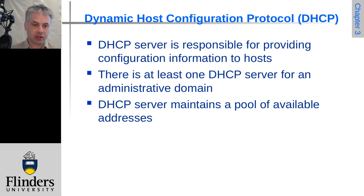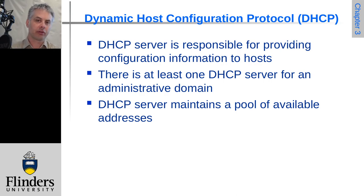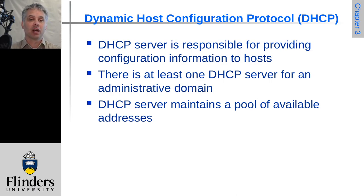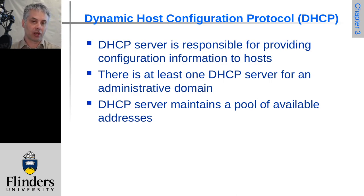DHCP is the Dynamic Host Configuration Protocol. When a computer first joins a network running internet protocol, it needs to know its IP address, the address of the default gateway and default router, and potentially other information such as what organisation it's based in and other configuration information.